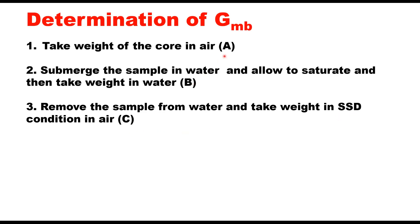Let us say these weights are A, B, and C. Then the bulk density is A upon C minus B. A is the weight of the sample in air. C is weight of the sample in air after making its saturated surface dry. B is the weight of the sample in water.